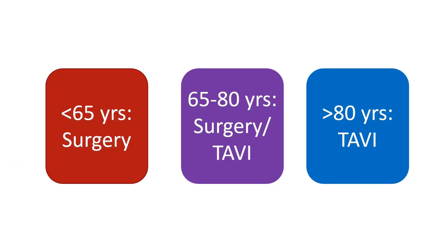In general, surgical replacement of the aortic valve is preferred in those below 65 years, while TAVI is the choice for those above 80 years. For those between 65 years and 80 years, both options can be contemplated, weighing the risks and benefits in each case and taking into consideration the person's preference as well.